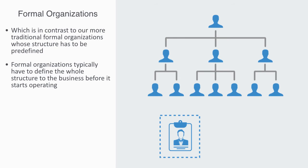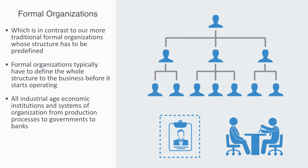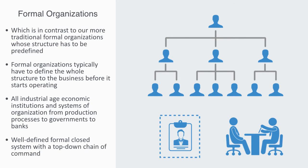We have to firstly decide that we need a new position, define how this position will relate to all the other positions, and then go through the process of finding and onboarding a new employee. This is the same for all of our industrial-age economic institutions and systems of organization. From production processes to governments to banks, they are all well-defined, formal, closed systems with a top-down chain of command that are optimized for relatively static and stable environments.